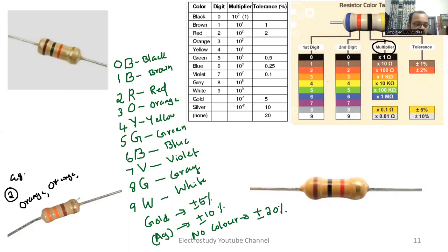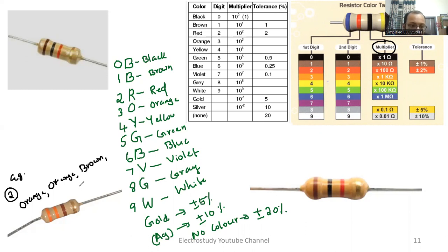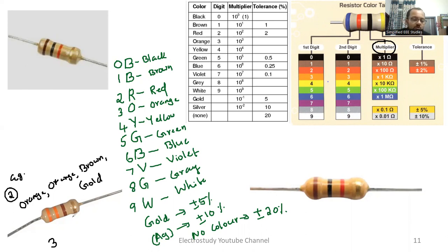The color is orange, then again orange. Next is brown, and then no color — this should be gold. Let us start: orange means the color code will be 3.